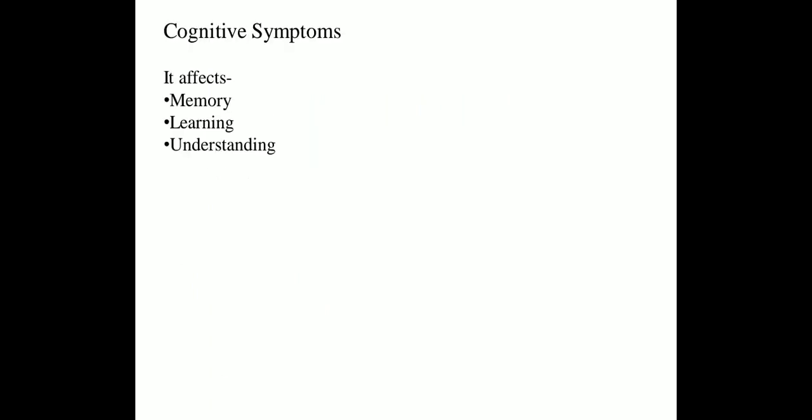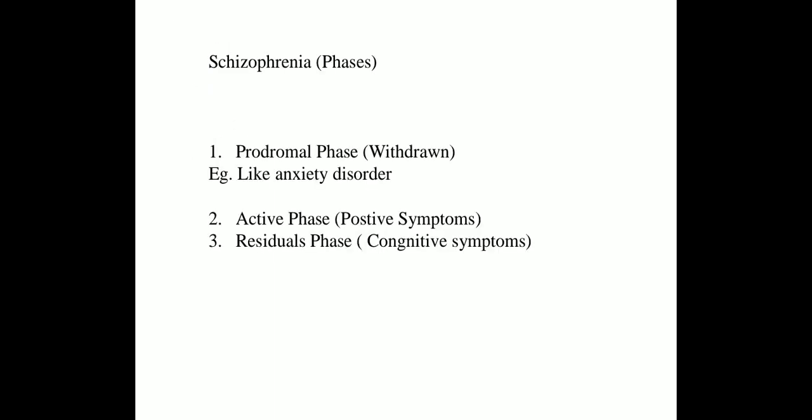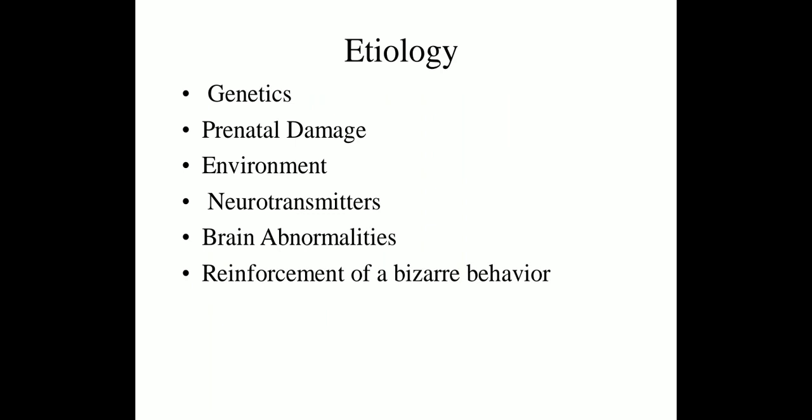The cognitive symptoms include memory, learning, understanding, and ability. Schizophrenia is divided into three phases. In phase one, the prodromal phase, withdrawal is observed. In that, anxiety-like symptoms are shown in some patients. Second is the active phase, in which positive symptoms are observed. Third is the residual phase, in which cognitive symptoms are observed.